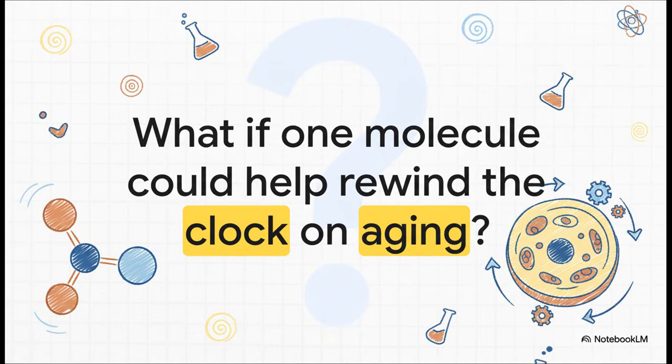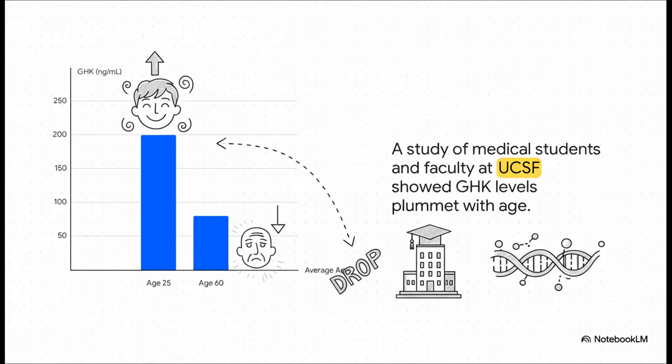I mean, that's the billion-dollar question, isn't it? Can we find one single thing that helps our bodies act younger, right down to the cellular level? With GHK-Cu, that is exactly what so many people are hoping for. So why all the excitement? Well, this chart pretty much says it all. When you're around 25 years old, your blood plasma is swimming in this stuff, about 200 nanograms per milliliter. But by the time you hit 60, it plummets to just 80. That is a huge drop. And it's exactly why scientists are so obsessed with figuring out what happens when we start putting it back.